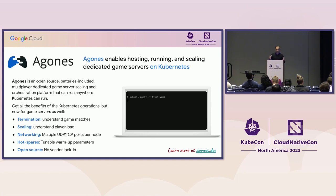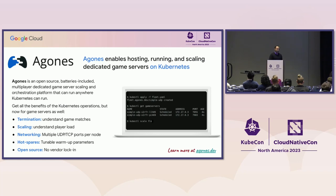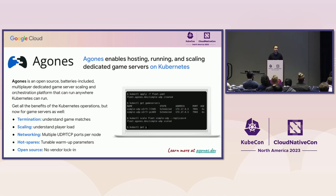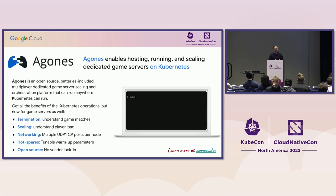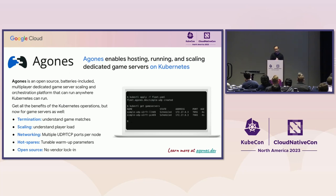Enter Agones. It's an open-source, batteries-included, multiplayer dedicated game server scaling and orchestration platform that can run anywhere Kubernetes can run. In 2017, in a partnership between Google Cloud and Ubisoft, we built Agones, which teaches Kubernetes how to run game servers. Since then, many contributors across Google and other game studios have continued to build and enhance Agones. Agones understands game sessions, scales with player loads, supports multiple network protocols (UDP, TCP), has tunable warm-up parameters, and of course it is open source.